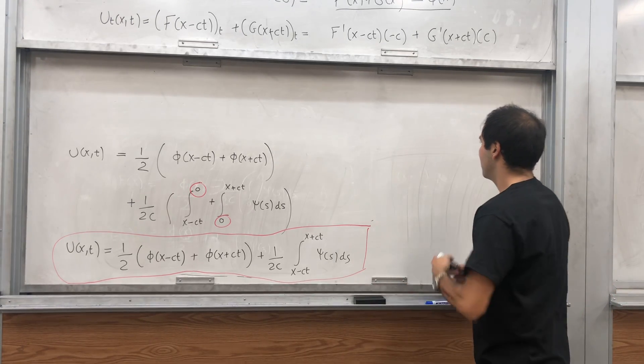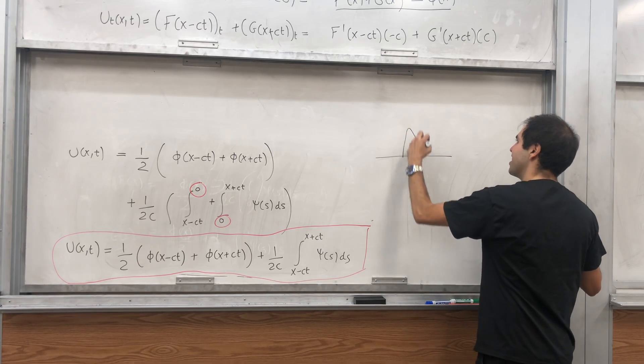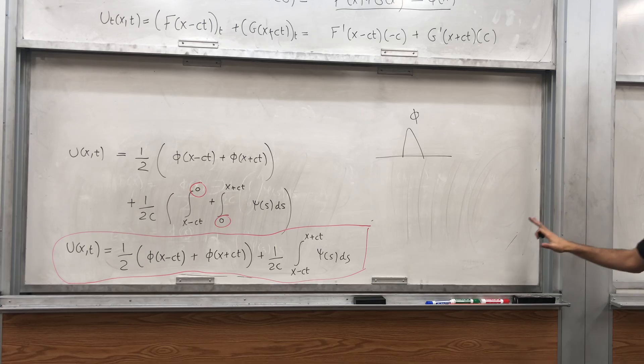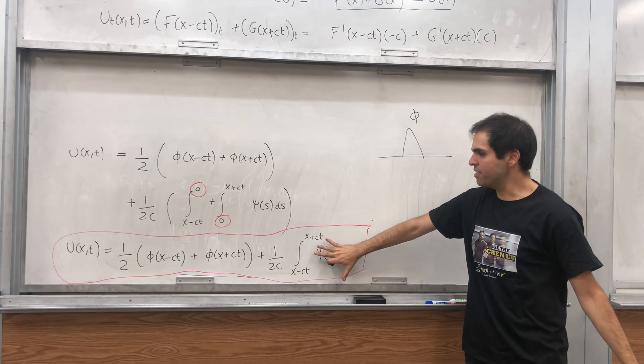So suppose it's this triangle, phi. And assume for a second that the velocity is zero, that psi is zero.